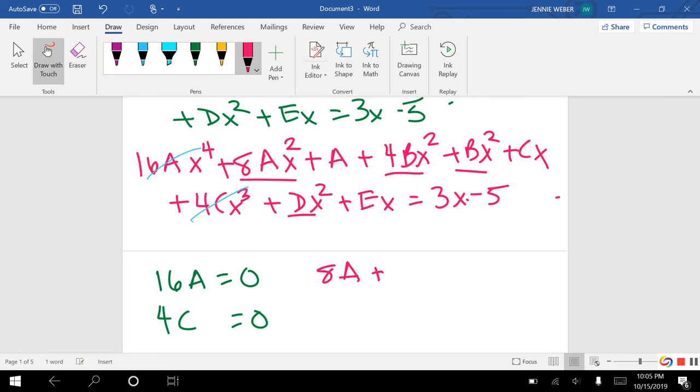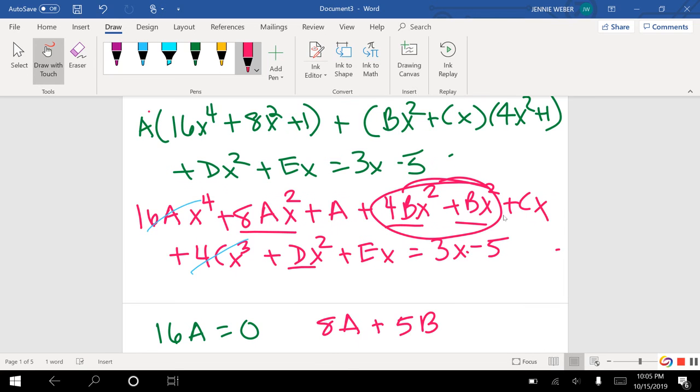So 8A plus 5B, because these two together. I'm going to go back and double check to make sure that's right. Did I lose an x squared, did I lose an equation? Did I make a mistake right there? Yes. So this is where this gets dicey.